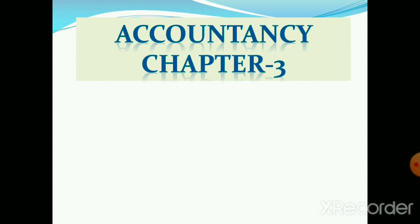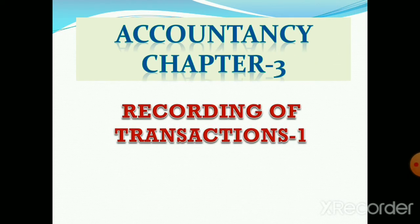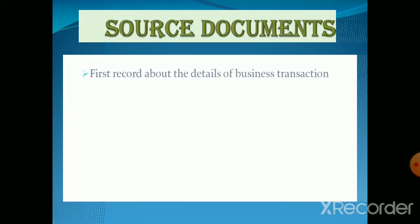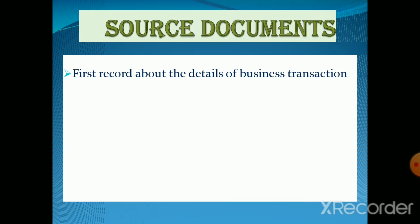In this session we'll be starting with the third chapter of accountancy, which is Recording of Transactions Part 1. The first topic of this chapter is source documents. Source documents are the first record about the details of a business transaction. Whenever a business transaction takes place, its details are first recorded in source documents. Entries in the books of accounts are always made from source documents, which are first recorded in the books of original entry — journal and subsidiary books.